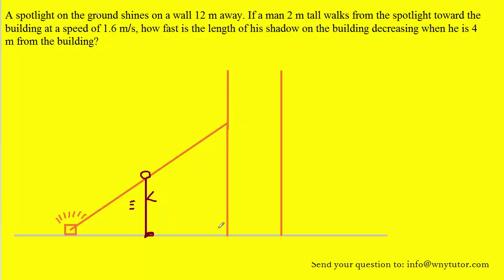What we need to do is label some additional information in the form of distances. Let X be the distance from the spotlight to the man. The man was two meters tall so that is labeled. We're letting Y equal the distance or length of his shadow against the building, and then 12 was the distance stated from the spotlight all the way to the wall.